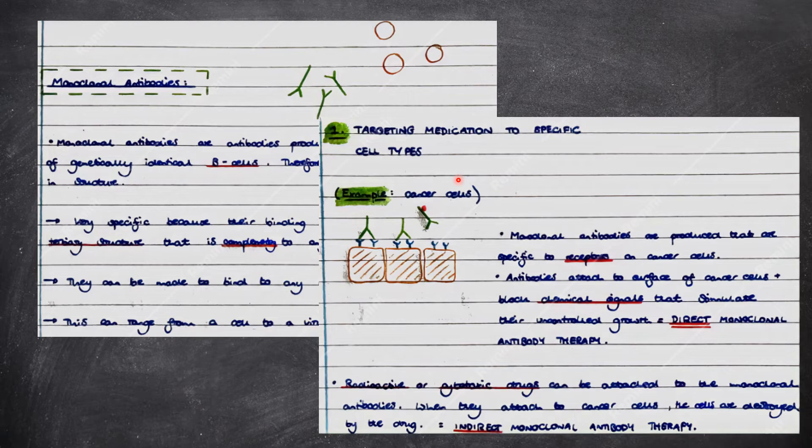There are several uses of monoclonal antibodies, one of them being to target medication to specific cell types, such as cancer cells. In this example, monoclonal antibodies are produced that are specific to receptors on cancer cells. The antibodies attach to the surface of the cancer cells and hereby block chemical signals that stimulate their uncontrolled growth. And this is called direct monoclonal antibody therapy.